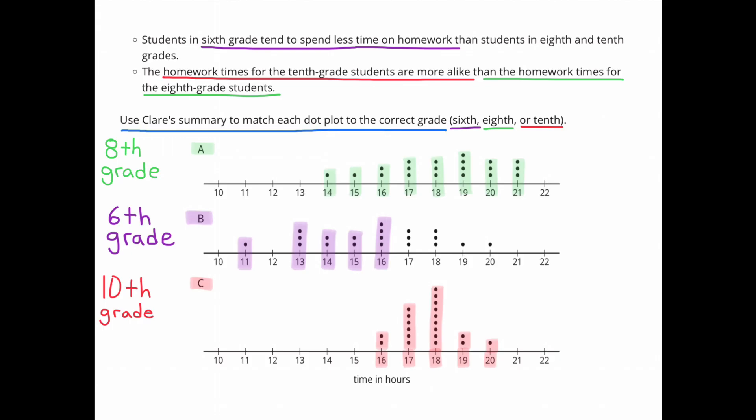So the one that's left over would be dot plot A for the 8th grade students. They spend more time than the 6th grade students and they're more spread out than the 10th grade students. So dot plot A represents the 8th grade students.